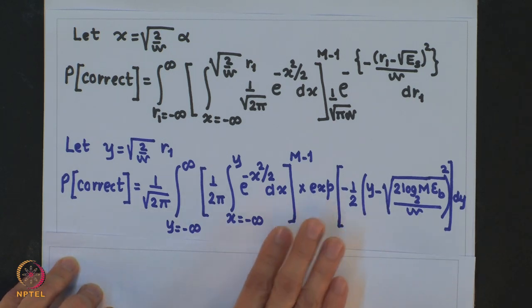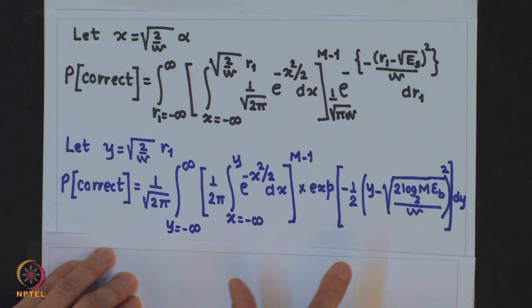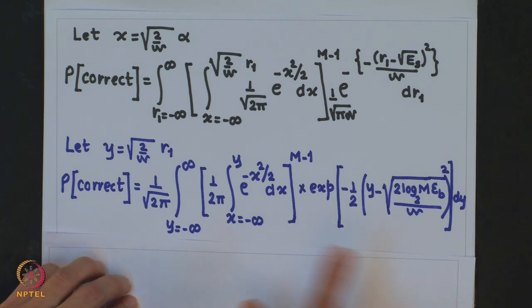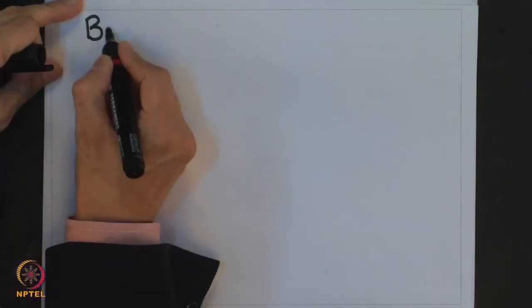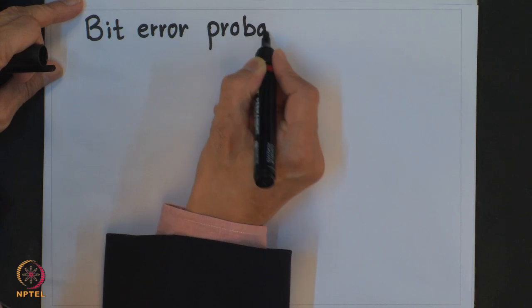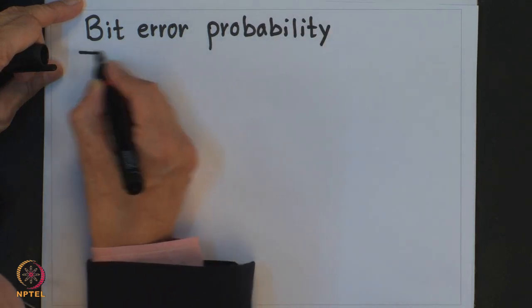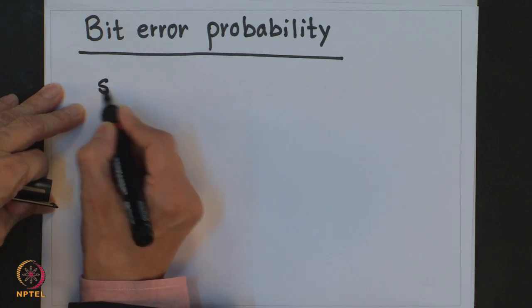Due to the symmetry of the M-ary FSK constellation, all mappings from sequences of N bits to signal points yield the same bit error probability. We will now derive the exact relationship between the probability of bit error and the probability of symbol error for M-ary FSK.